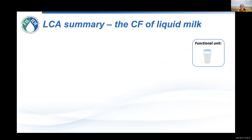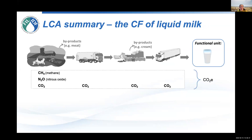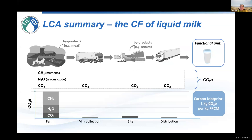Ultimately, we should have the chain ending in a functional unit — in this instance, for example, a glass of milk. We've summed up and quantified all of the different gases in terms of methane, nitrous oxide and CO2 from the farm, and CO2 from fuel use for transport and processing and more transport. Then we can calculate the proportions of all of these different gases as they go into the total carbon footprint. In this example, the farm contributes most of the total carbon footprint, with relatively small proportions from milk collection, processing and distributing — which would be fairly standard for most carbon footprints of a litre or a glass of milk. Thank you very much.